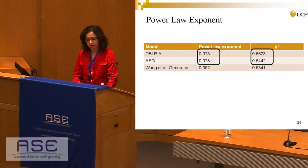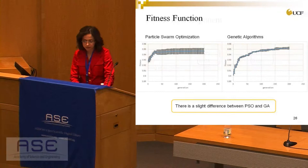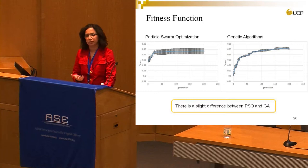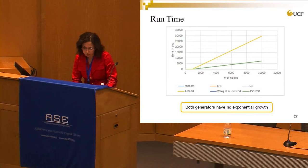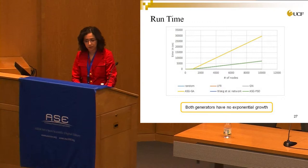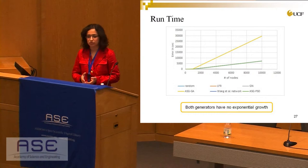This shows the fitness function results from particle swarm optimization and the genetic algorithm. Both methods were able to achieve a very high correlation coefficient with the real dataset, meaning we were able to clone the statistics. Particle swarm optimization converged faster than the genetic algorithm, and the genetic algorithm required more time. Therefore, we opted to use particle swarm optimization in all our experiments.